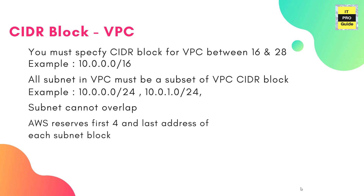The next step after creating a VPC is to create a subnet. When you create a subnet, you specify a CIDR block for the subnet, which is a subset of the VPC CIDR block. For example, if the VPC CIDR block is 10.0.0.0/16, then a subnet can be 10.0.1.0/24. The allowed block size for a VPC CIDR block is between /16 and /28. AWS reserves the first four IP addresses and the last address of each subnet block.